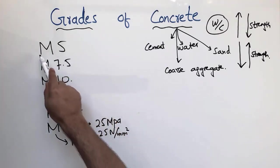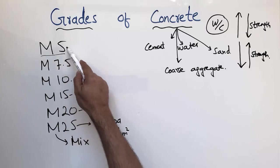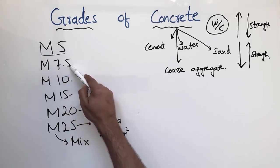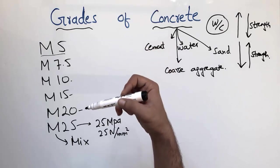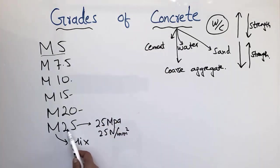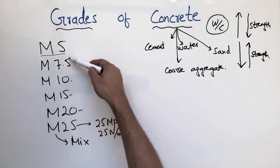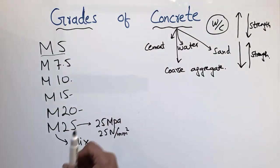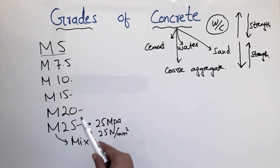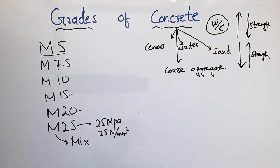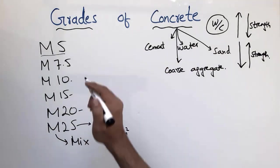M5 is a low-strength concrete because 5 is a lower value. As the number increases, the strength increases. For example, M25 is the highest strength among those mentioned — M25 means the mix has a strength of 25 megapascals or 25 Newtons per square millimeter. These strengths can be achieved with a nominal mix design.